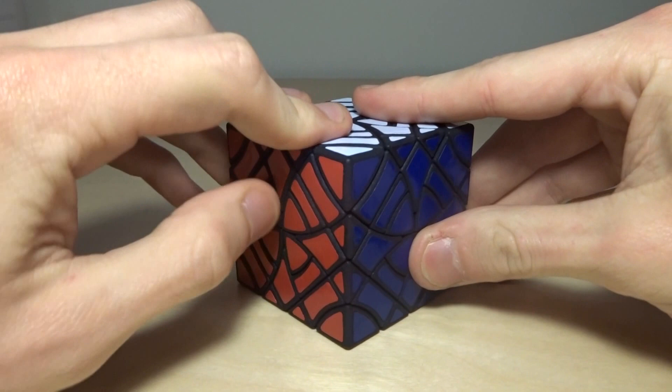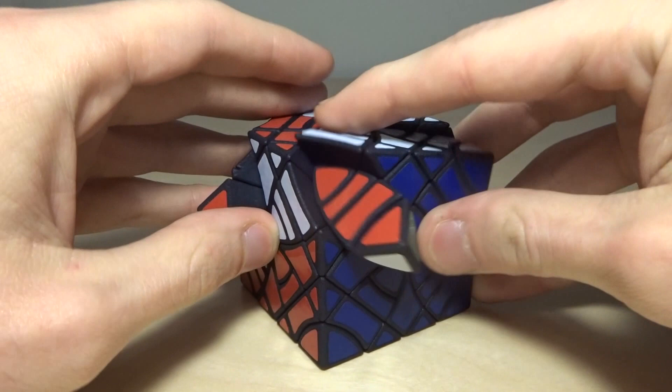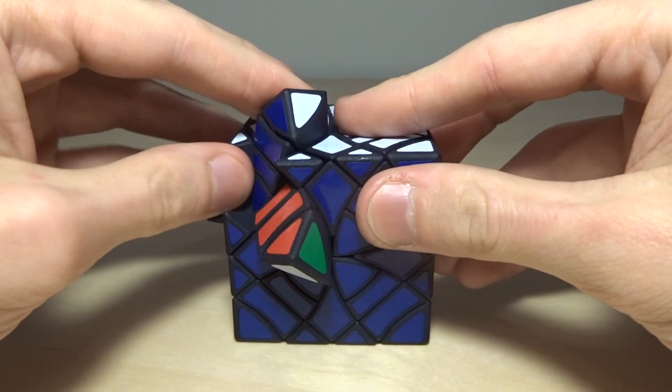The puzzle, much like a normal Curvy Copter, can jumble, as you can see. I just do the typical jumbling move. And like the Curvy Copter PLUS, it can also use these stored cuts to move pieces around and exchange corners for these jumbling pedals. I'll just put it back.